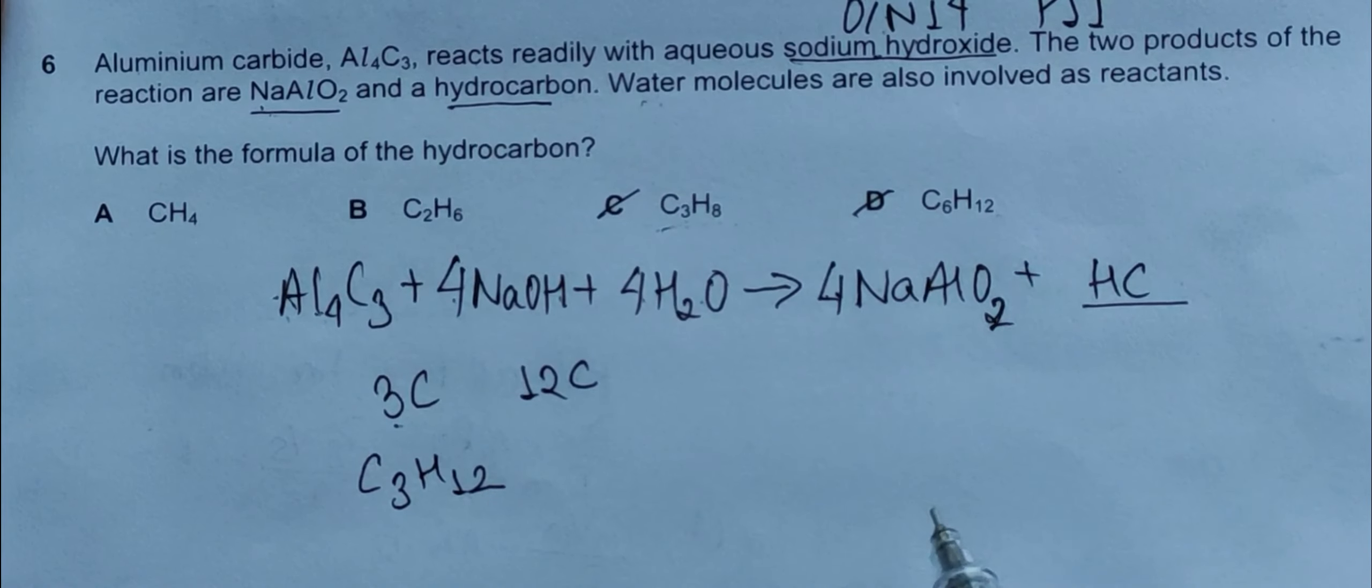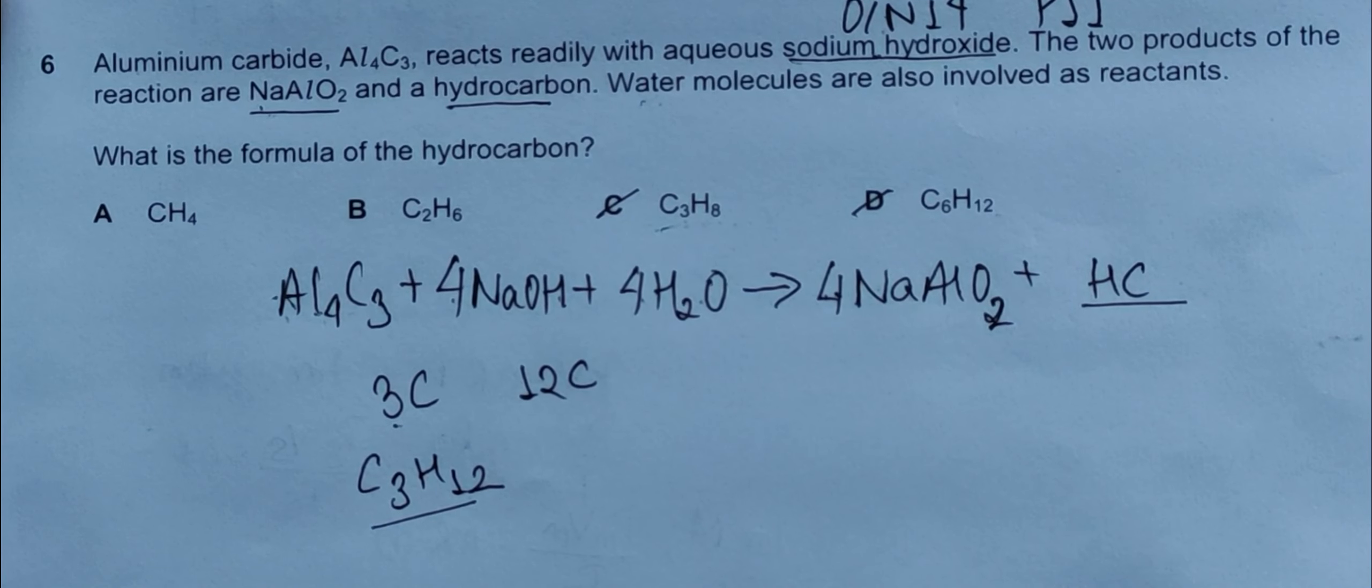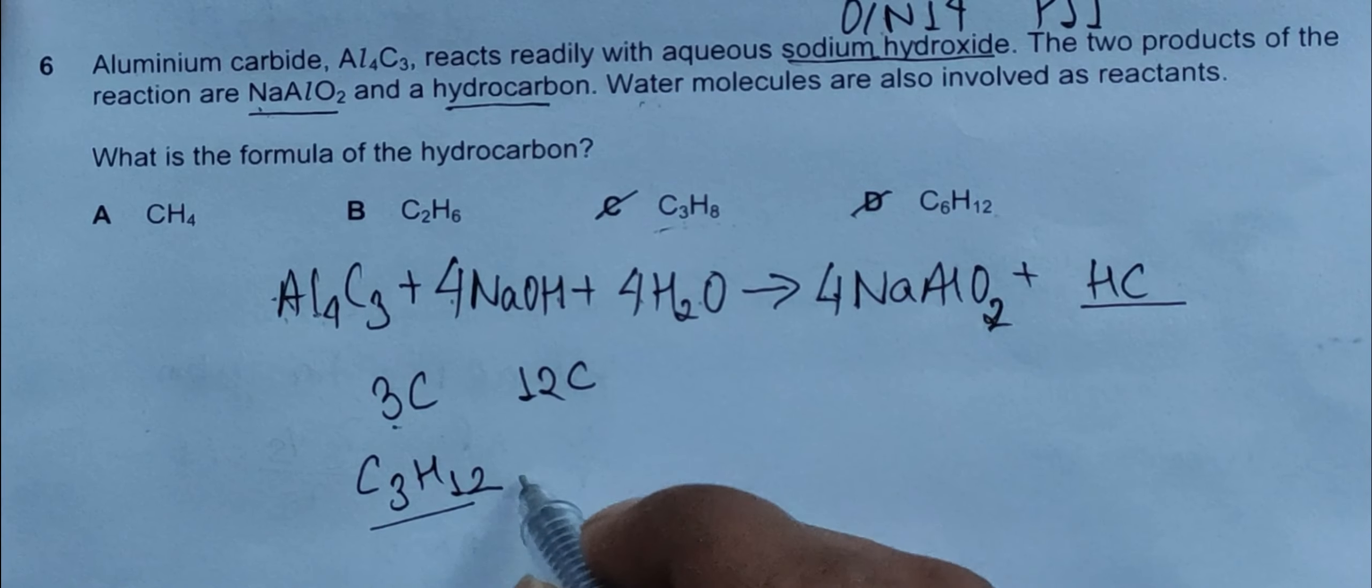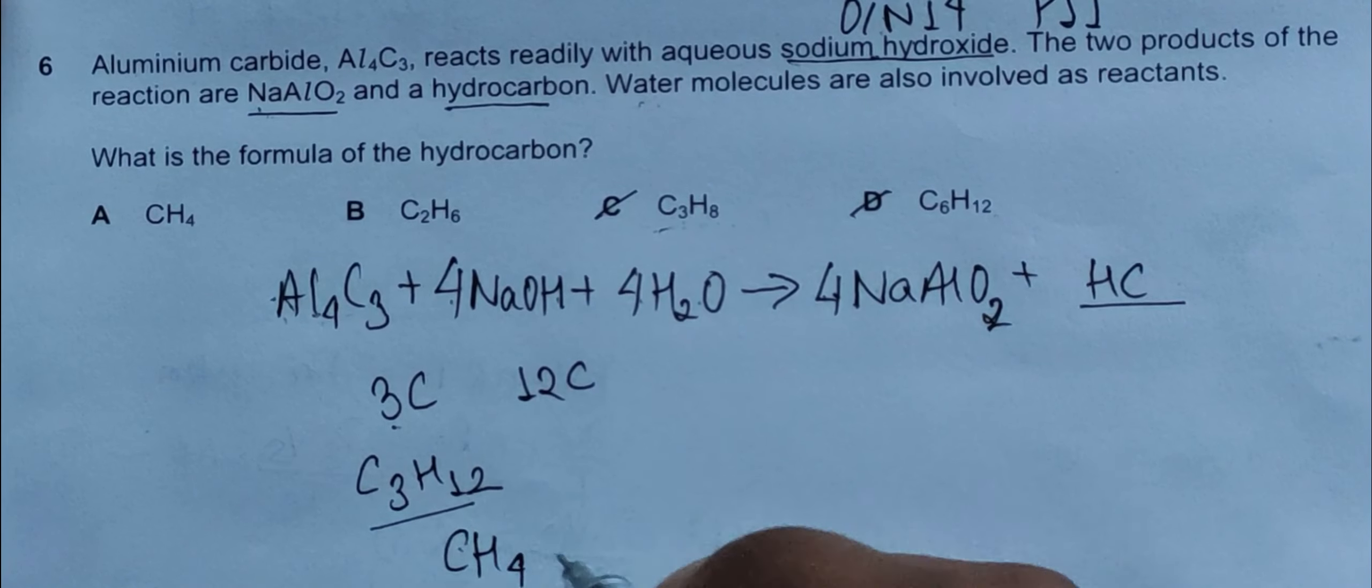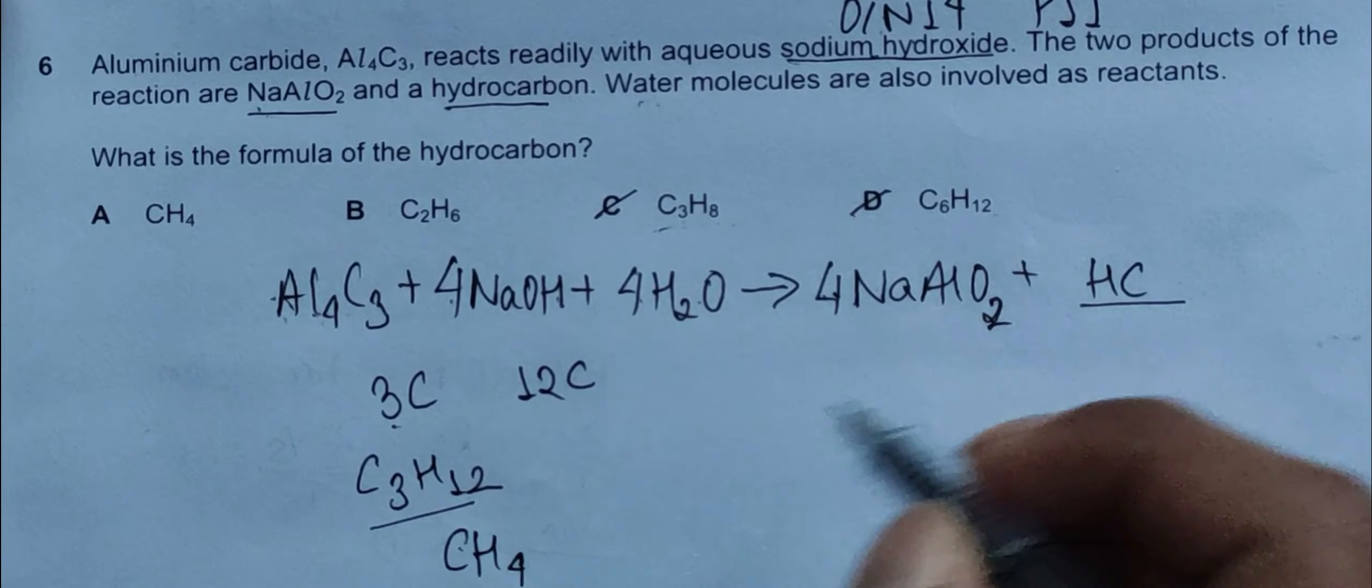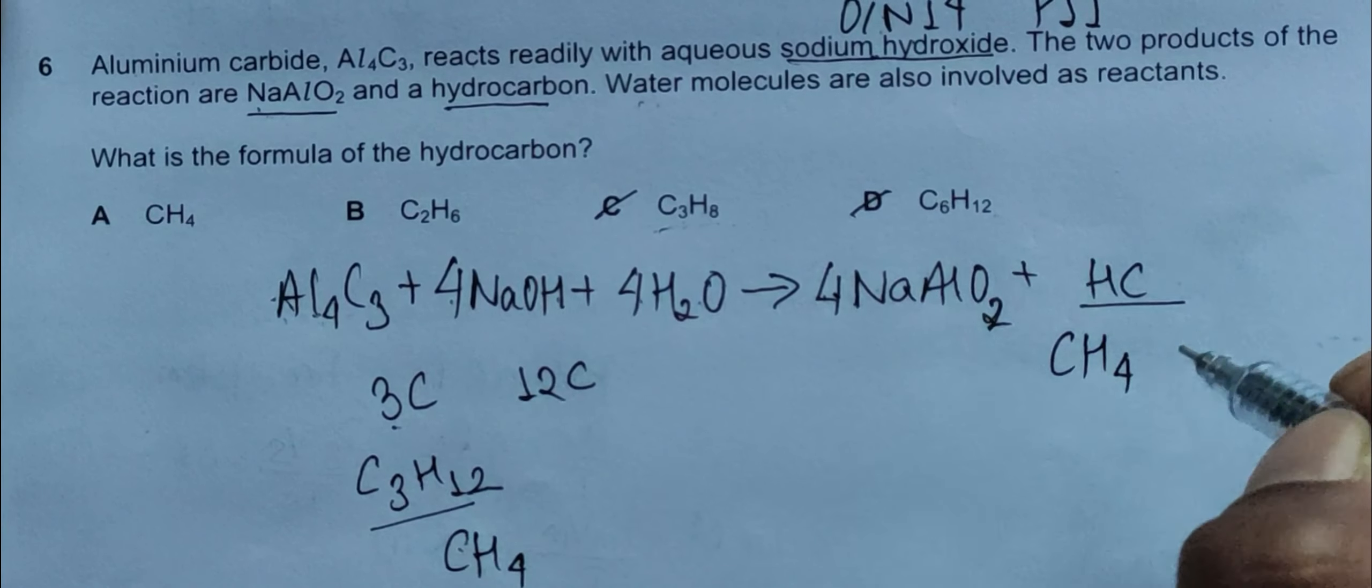Now from the remaining two options, what we can do is try to reduce this to its empirical formula. The empirical formula of this is CH4 because four threes are twelve. So this has to be CH4.